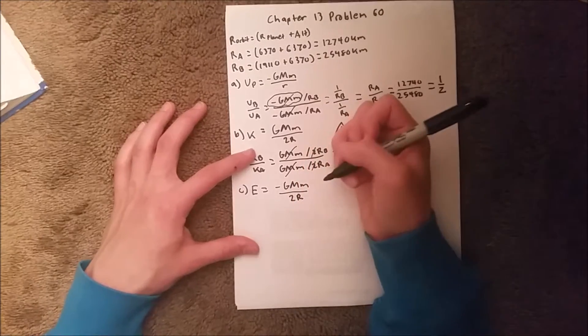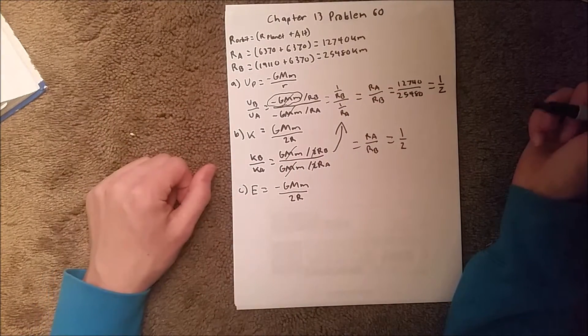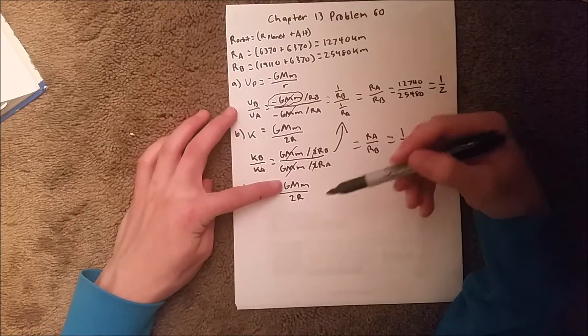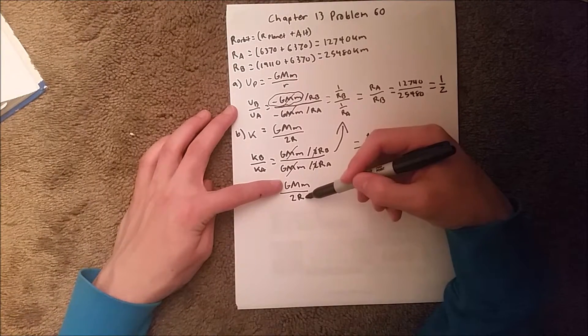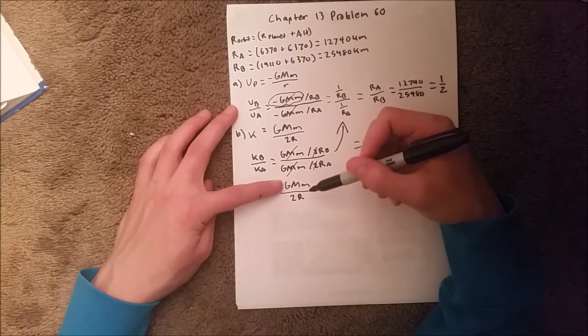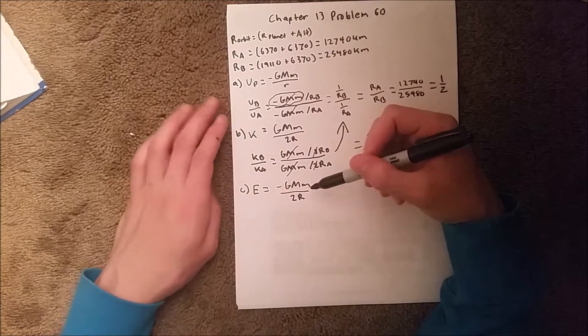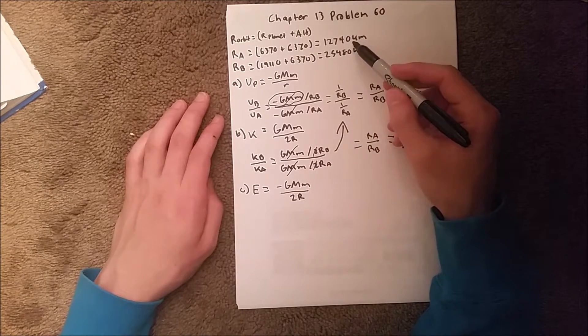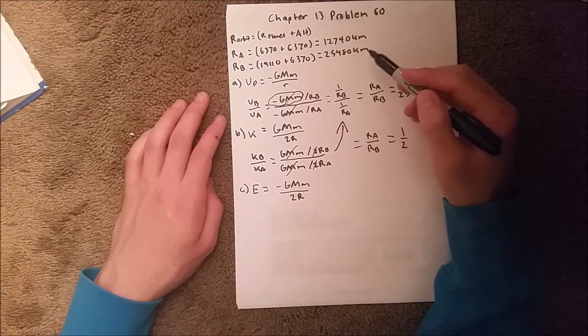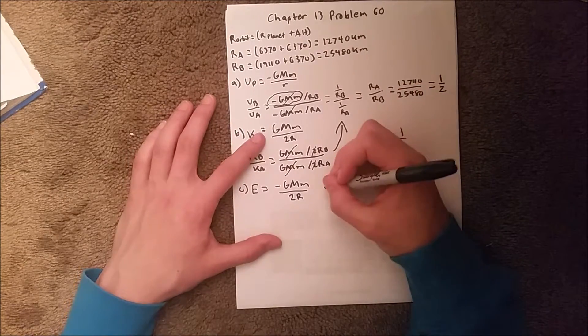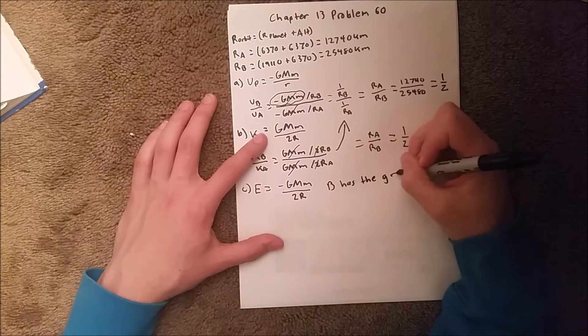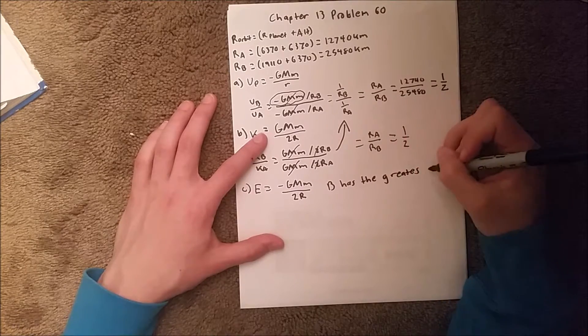Now we can actually solve this problem without plugging in any numbers, because we know here that without this negative, since the radius is in the denominator, the smaller radius will yield a larger energy. But since the term is negative, that would actually yield a smaller energy. So in this case, the one with the larger radius, which is B, has the greatest energy.